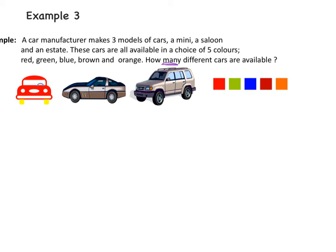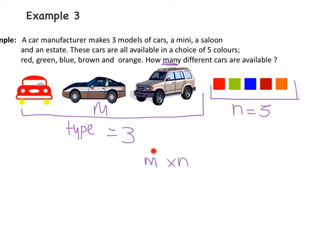There are 2 different events here. The first event is the type of car, and that's event m. In this case there are 3 types of cars. The second event is the color that you can choose, so that is our n in this situation, and there are 5 different colors you can choose. So our formula for the number of outcomes is m multiplied by n, which is 3 multiplied by 5. So there are 15 different cars you can actually buy depending on your make and color.